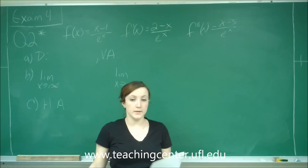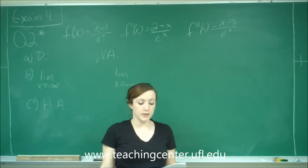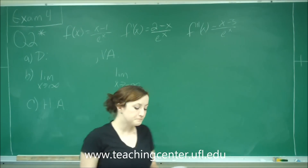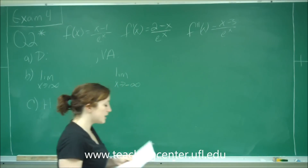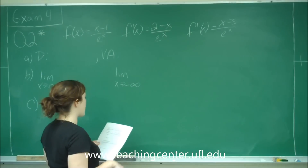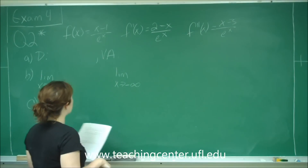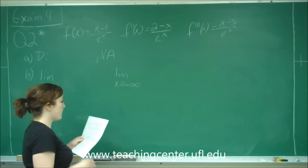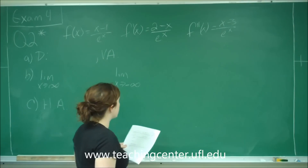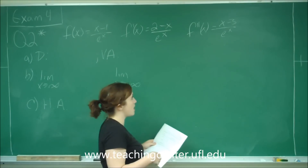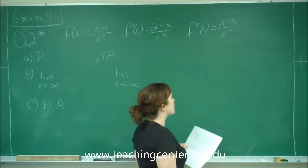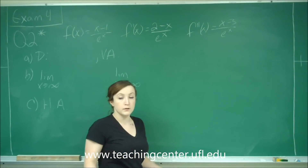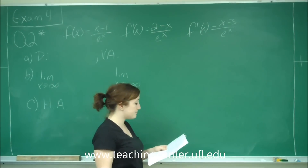This is question number two on the tear-off portion of exam 4 version A. It gives us the information: f of x is equal to x minus 1 over e to the x, f prime of x is equal to 2 minus x over e to the x, and f double prime of x is equal to x minus 3 over e to the x. They already give you your first and second derivative — you don't have to take that.